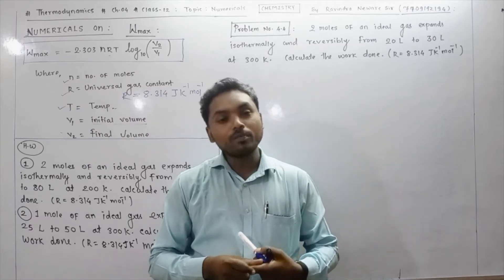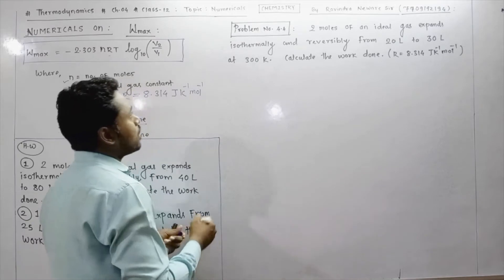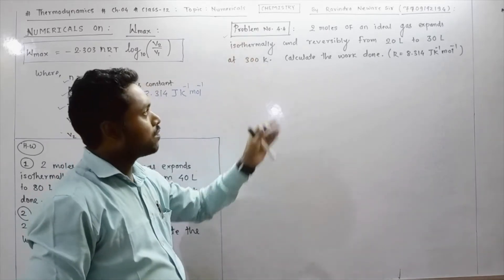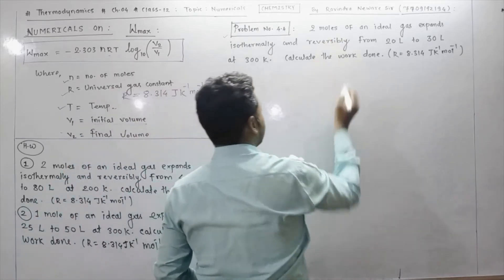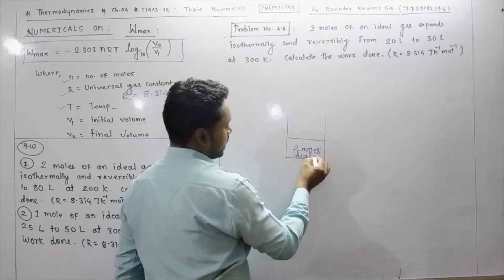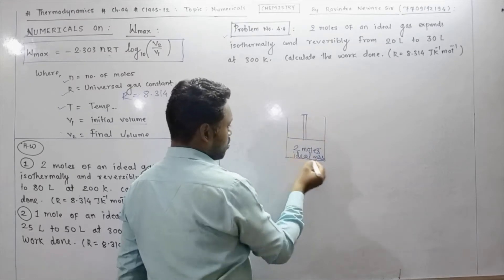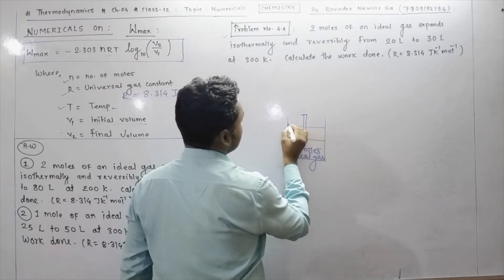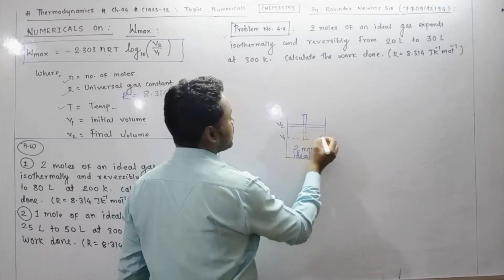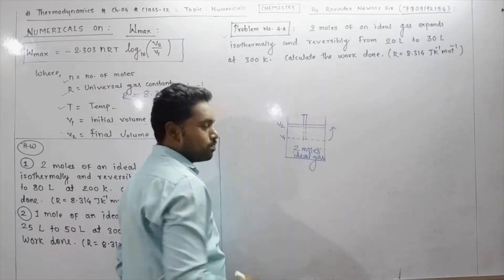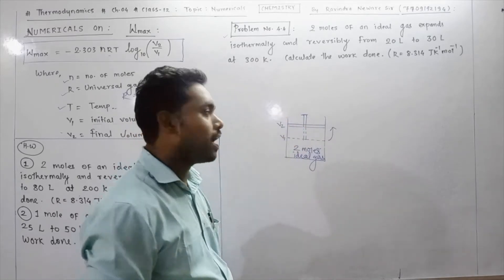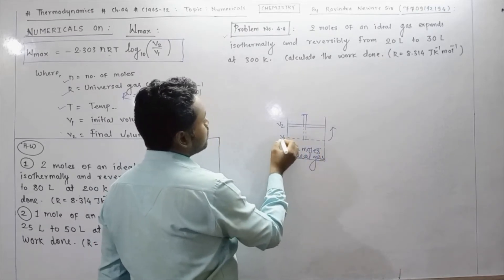In this video, we will solve the questions available using this formula. The first problem is written on the board — problem number 4.4, a solved problem from the textbook. The problem states: 2 moles of an ideal gas expands from an initial volume V1 to a final volume V2, with the piston moving from bottom to top.